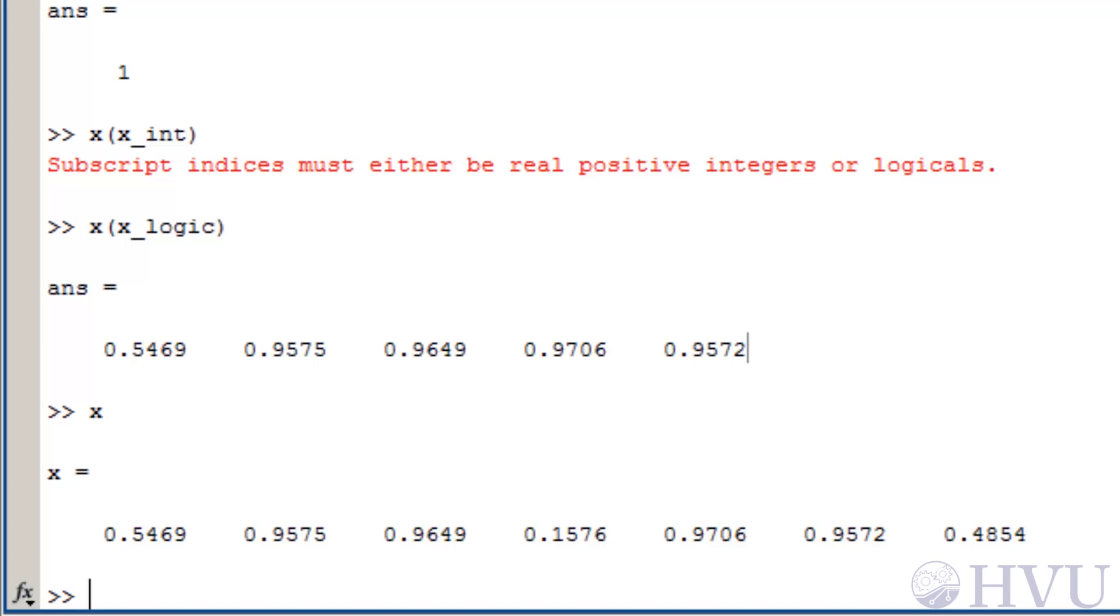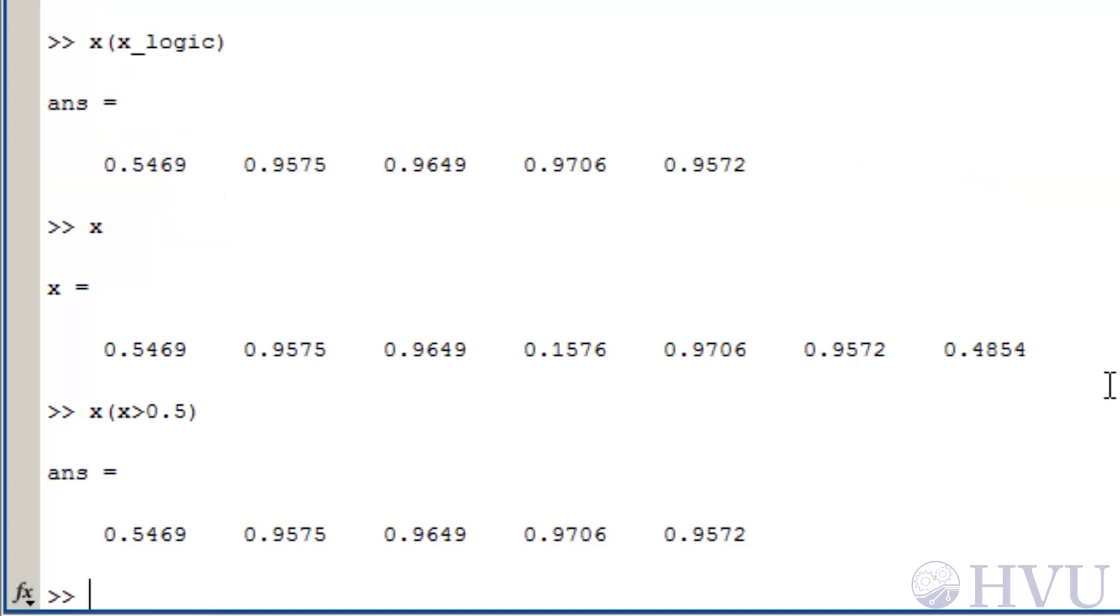Now instead of my previous approach, I'll just type x of x greater than 0.5. The arguments to the array x are defined by the logical operator x greater than 0.5. This operation returns a logical array that has 1s where the values of x are greater than 0.5 and 0s everywhere else. When this is used to access elements of x, the returned values are the elements of x that are larger than 0.5.